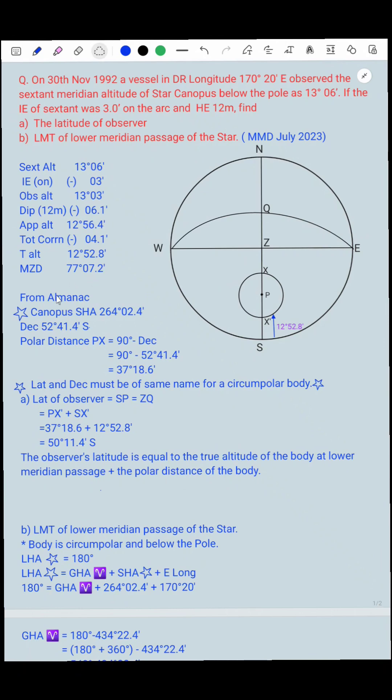Now from Almanac for 30th November 1992, we find out the star Canopus and SHA, the sidereal hour angle, is 264 degrees 02.4 minutes and declination is 52 degrees 41.4 minutes south. We know that polar distance is equal to 90 degrees minus declination. So 90 degrees minus declination 52 degrees 41.4, we got as 37 degrees 18.6.